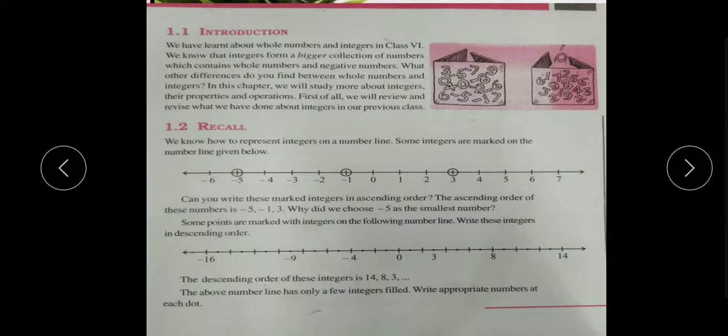In ascending order we will write it as minus 5, minus 1, 3. Why did we choose minus 5 as the smallest number? Because in ascending order, we have smallest number first, then bigger, then bigger - that's how we write ascending order.